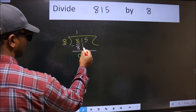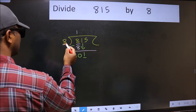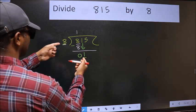After this, bring down the beside number. 1 down. Now here we have 1 and here 8. 1 is smaller than 8.